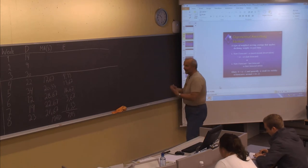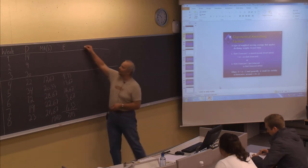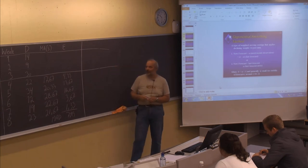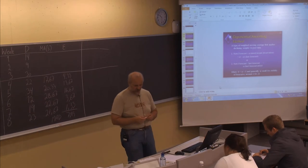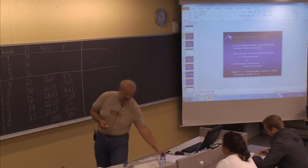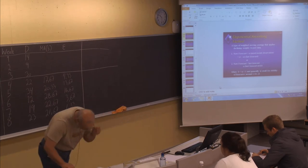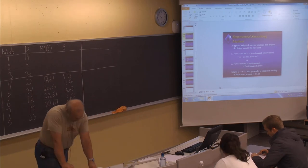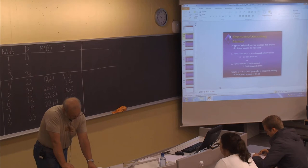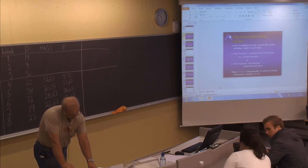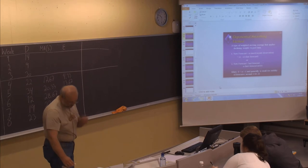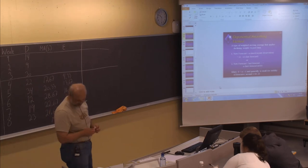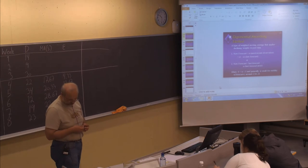This is the way to solve this problem when you are using the moving averages method with an N value of 3. Let's now try to solve this one by exponential smoothing. We are also given a smoothing constant value in problem B, which is alpha equals 0.15. So now we want to find the exponential smoothing forecast for weeks four up to eight.